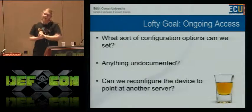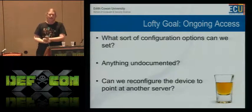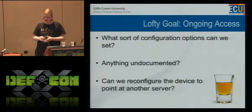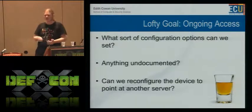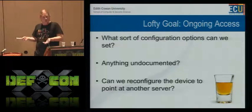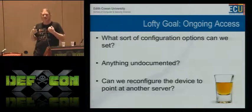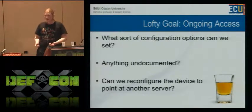My lofty goal is ongoing access. There are a few configuration options you can push through with ActiveSync, and one of them is to change the outgoing mail server. This is necessary in some deployments, but essentially we could have persistent access to all their outgoing mail from that device. What I want to know is: is there anything undocumented in there? Could we perhaps say, from now on, use this server instead for everything? I want to see if there's a way to get decent ongoing access, so we can have a persistent man-in-the-middle after they've left our area of influence.